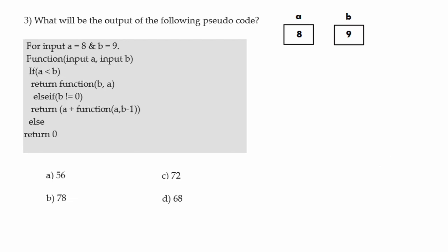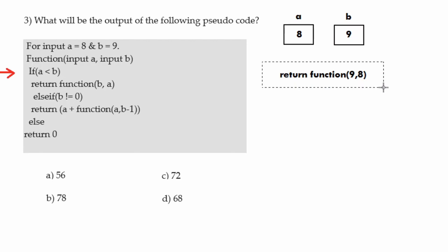Moving to the next question: we have two variables a and b, with a equal to 8 and b equal to 9. There is a function taking two arguments — input a, input b. We need to find the output. When the function executes, the if statement is checked: if a less than b. Since a is 8 and b is 9, the condition is true, so we execute 'return function(b, a)', meaning the function calls itself recursively with arguments swapped.